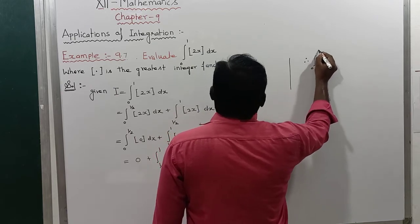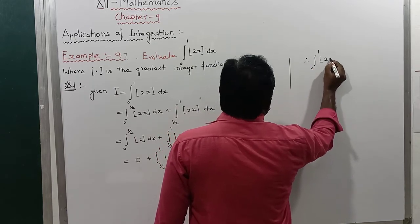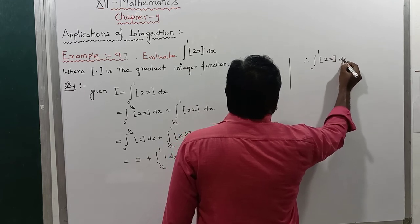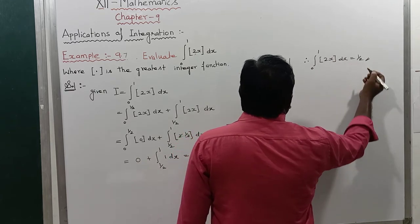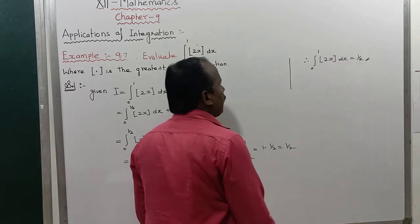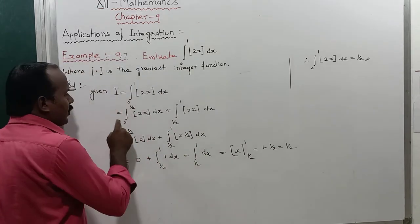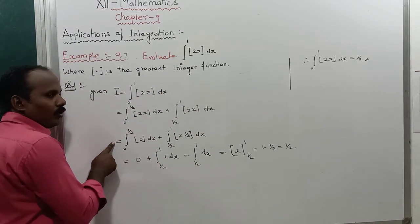Therefore, the integral from 0 to 1 of the greatest integer function of 2x dx is equal to 1/2. That is the answer. Very important steps: the second step and third step are key.